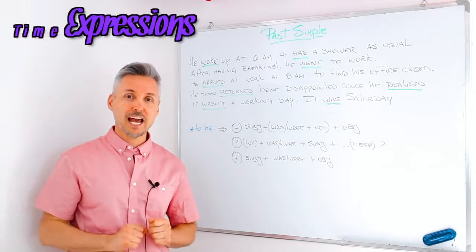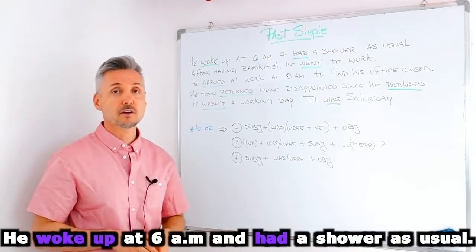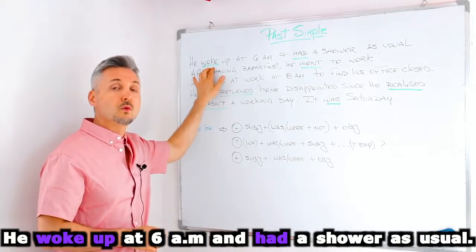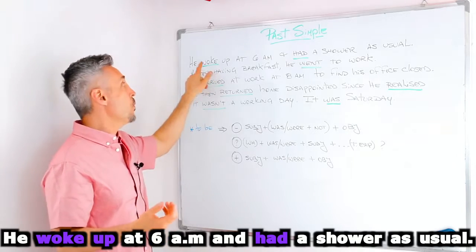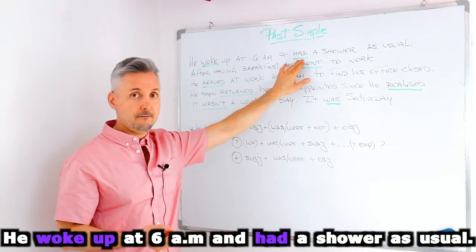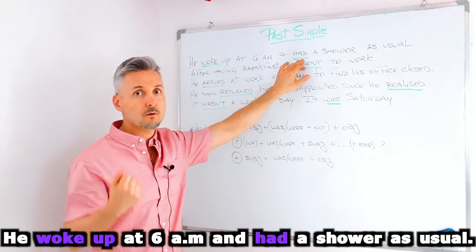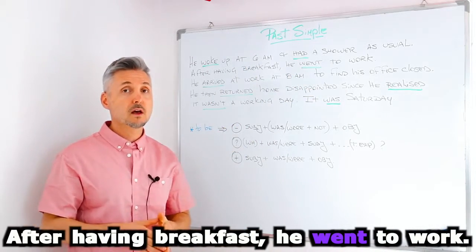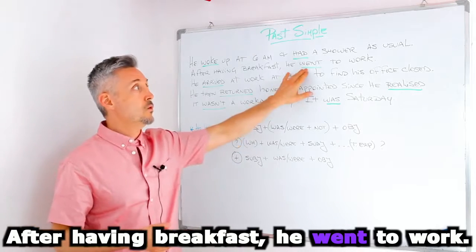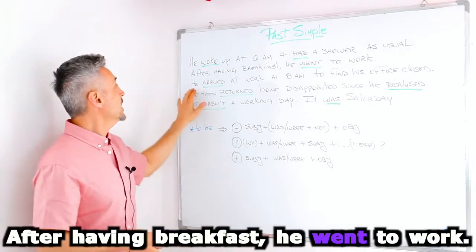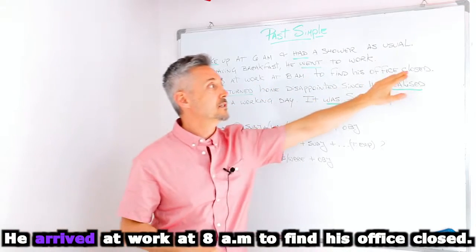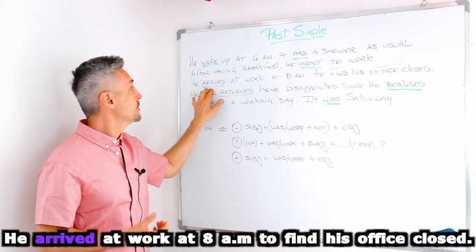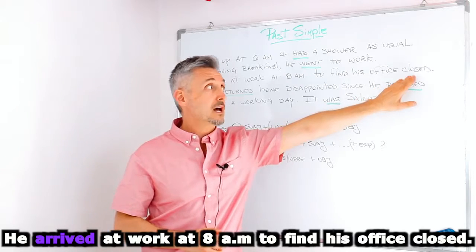Let's look at the story. 'He woke up at 6 a.m. and had a shower as usual.' In this sentence we have two past tenses: 'to wake up' is irregular, so 'woke up'; 'to have' — the past is 'had,' also irregular. Then, 'after having breakfast, he went to work' — 'to go' is irregular and the past is 'went.' 'He arrived at work at 8 a.m. to find his office closed' — 'arrived' is the regular past of 'to arrive,' and 'closed' here is an adjective, not a verb.